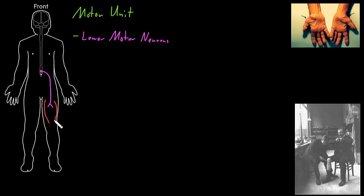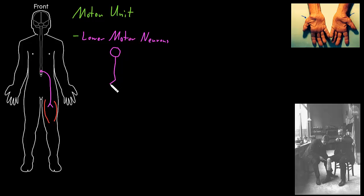Let me draw a red outline for some of the skeletal muscle in the thigh. Skeletal muscle is the main muscle type of our body, all over our body, and mostly connected to our skeleton to move us around. The neurons of the nervous system that tell skeletal muscle when to contract are the lower motor neurons. The term motor unit refers to one lower motor neuron — let me draw a soma and an axon coming out, with two axon terminals, although they can have lots of axon terminals.